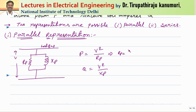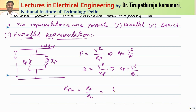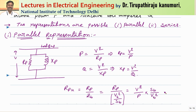From this, I can write rp equals V squared divided by P, and xp equals V squared divided by Q. So the per unit value of r can be calculated as rp divided by the base impedance, where base impedance equals V_base squared divided by S_base. Substituting the value of rp, this becomes V squared over P multiplied by S_base over V_base squared. The ratio V over V_base becomes V per unit, so this gives r per unit equals V_pu squared times S_base divided by P.